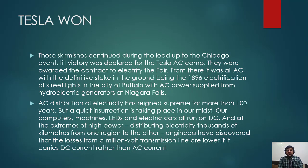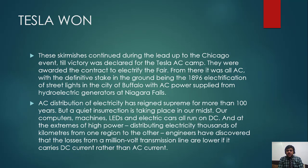The skirmishes continued during the lead-up to the Chicago event until victory was declared for Tesla's AC camp. They were awarded the contract to electrify the fair. From there it was all AC, with a definitive stake in the ground being the 1896 electrification of street lights in the city of Buffalo, with AC supply from hydroelectric generators at Niagara Falls.